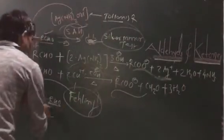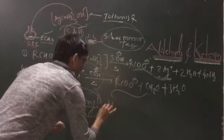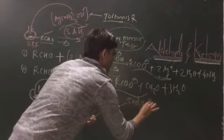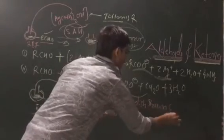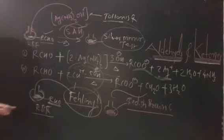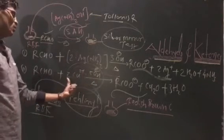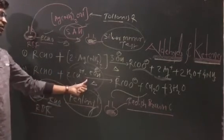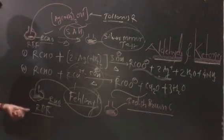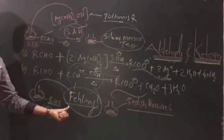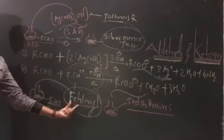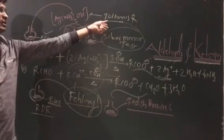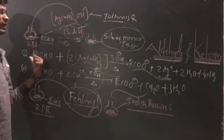After addition of Fehling's solution to the RBF, the mixture forms a reddish-brown color precipitate (reddish brown PPT). The addition of copper hydroxide (2Cu²⁺ + 5H₂O) with aldehyde reacts with Fehling's solution to give the reddish-brown precipitate. This test using Fehling's solution is another test useful to distinguish between aldehydes and ketones.